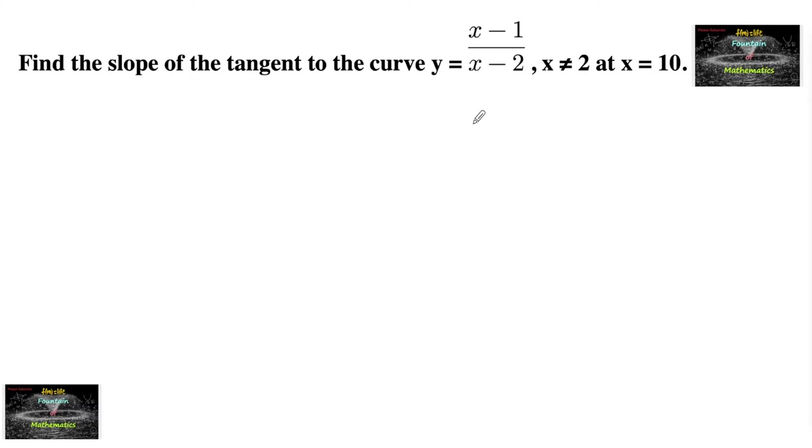Find the slope of the tangent to the curve y equals x minus 1 over x minus 2, where x not equals 2, at x equals 10.